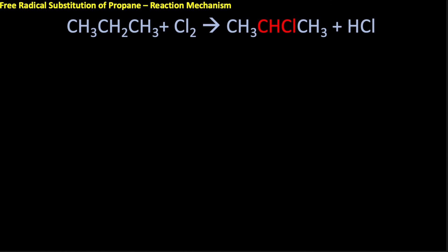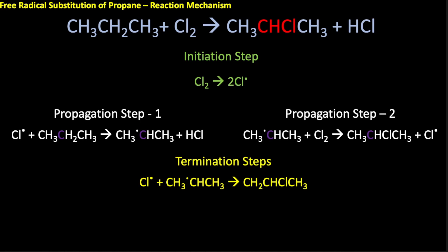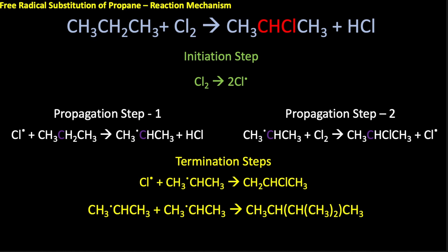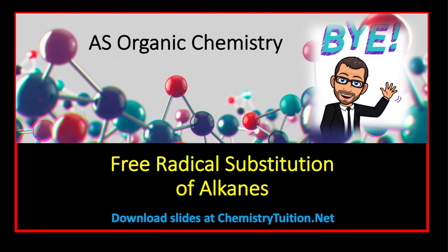To create 2-chloropropane, initiation is the same, but propagation involves the chlorine removing a hydrogen from carbon two, and that free radical then reacts with a chlorine molecule to give 2-chloropropane. Termination involves those free radicals coming together in a similar way; two propyl free radicals can also combine, though they join in a different way. That is it for free radical substitution — you can download these slides at chemistrytuition.net.